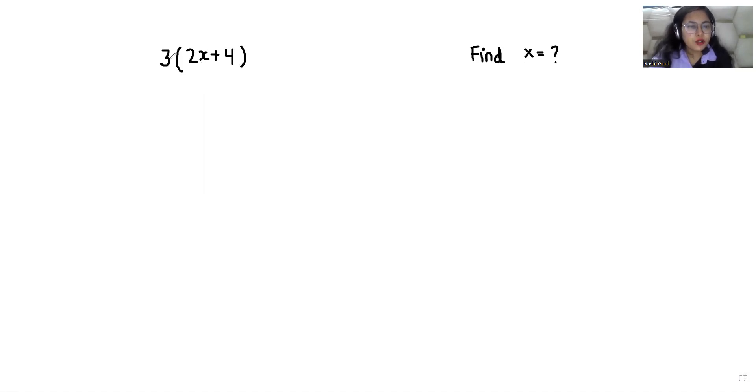So let's start. If there is a bracket, our first rule is to solve the bracket. But inside the bracket there is a constant and a variable, so we can't add them together. So first we multiply 3.